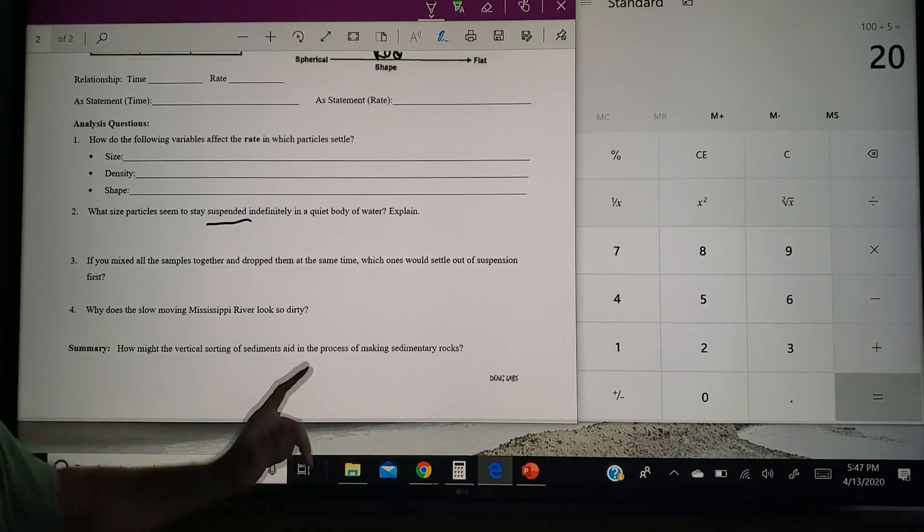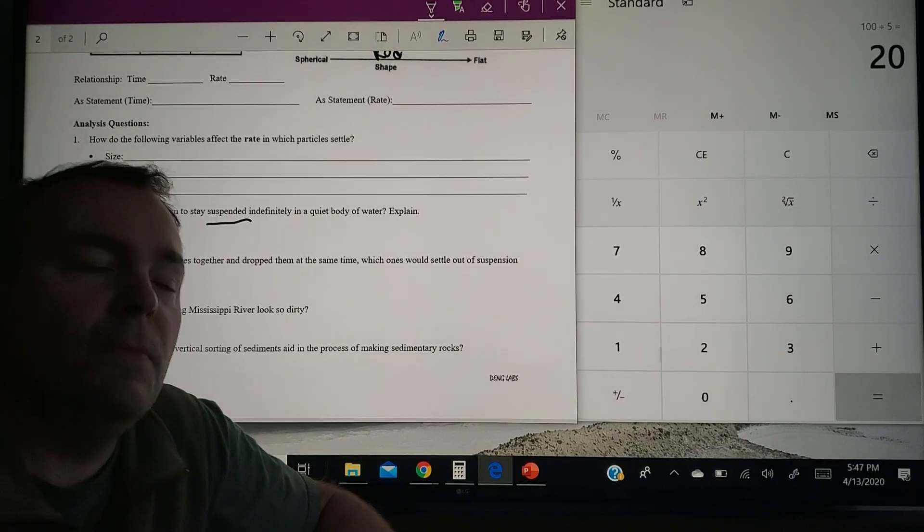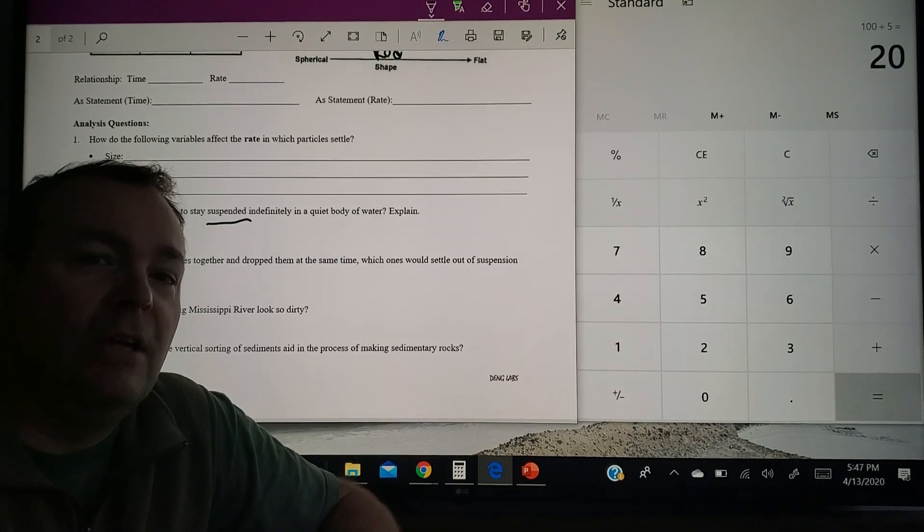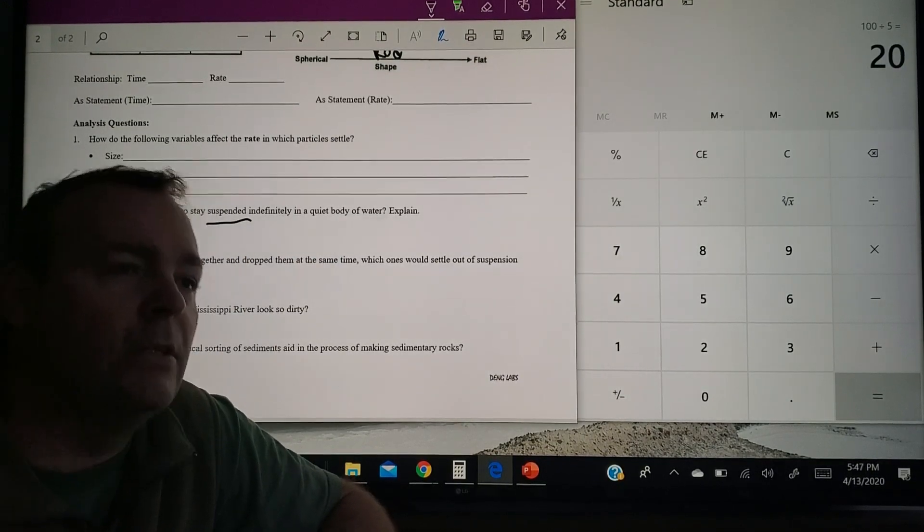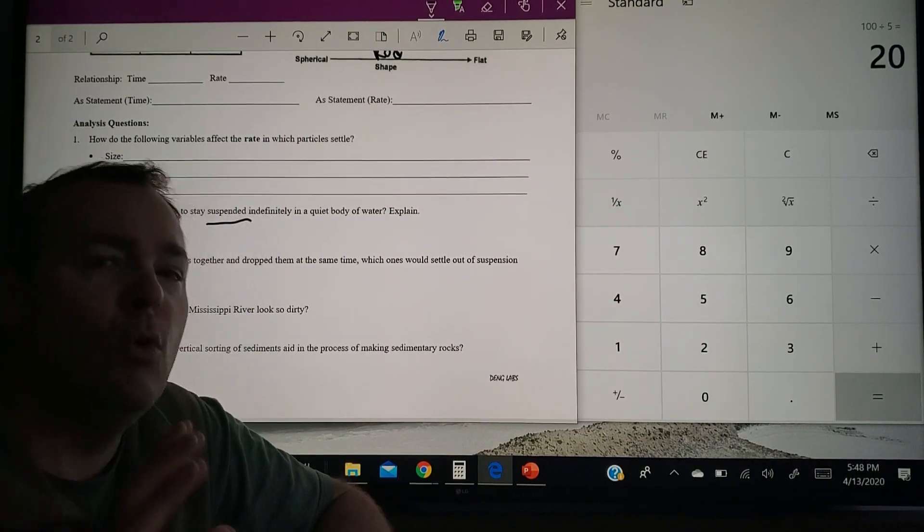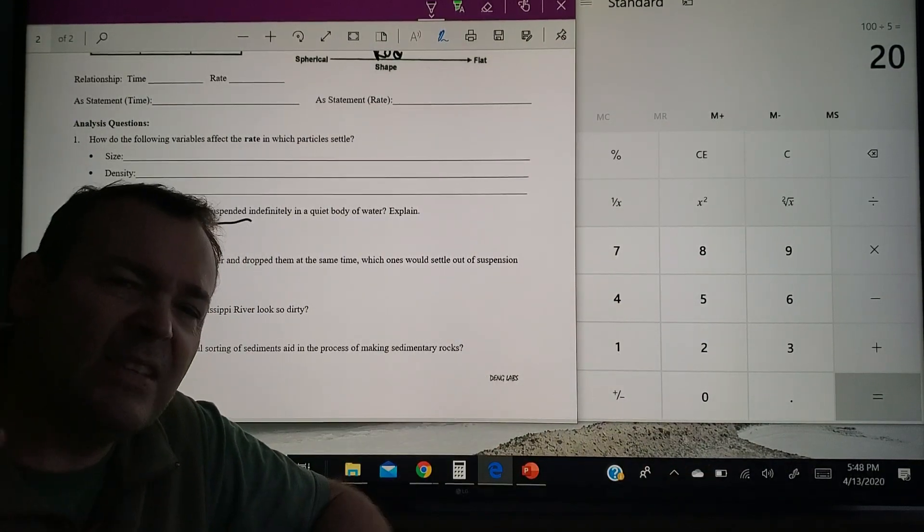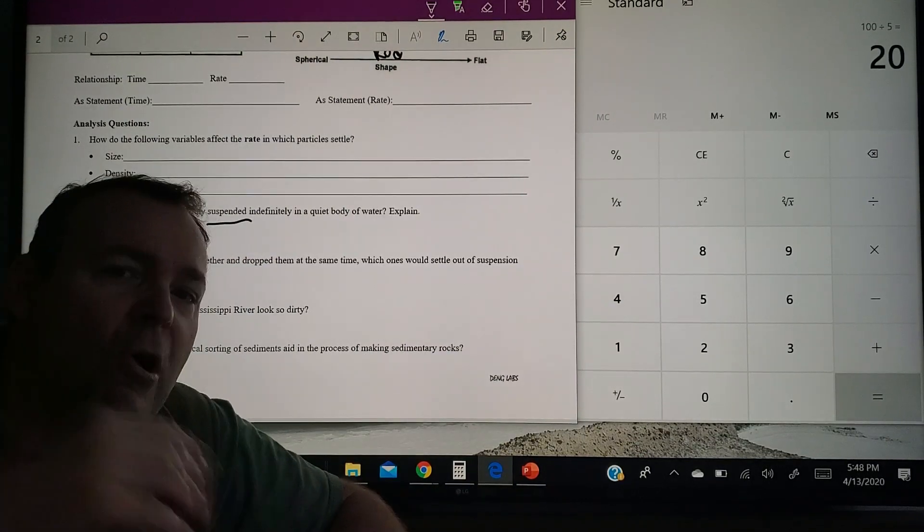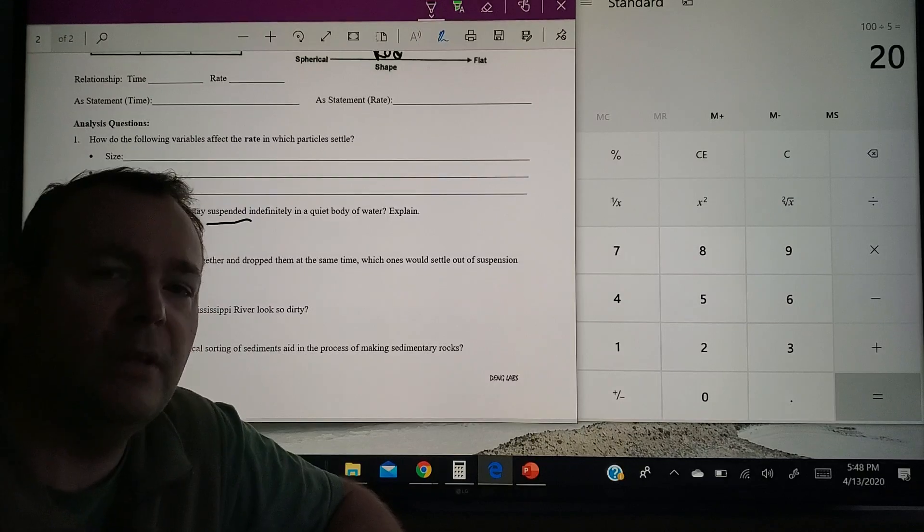Number four is asking, why does the Mississippi River look so dirty? Well, if you look at the Mississippi, it looks like brown. It's got a lot of particles held in suspension, right? The clay and the silt. So you could filter that out and get pretty clear water, but because it is moving, it's moving slowly, but it's fast enough to pick up all the silt in the sand that runs off from the farms and every place that it cuts through in the United States.